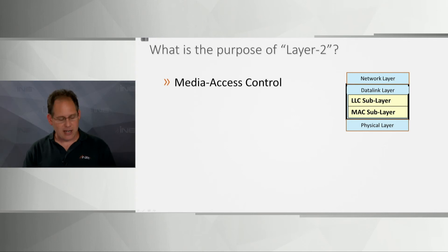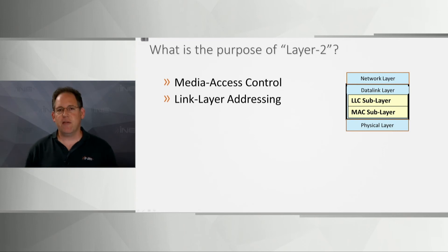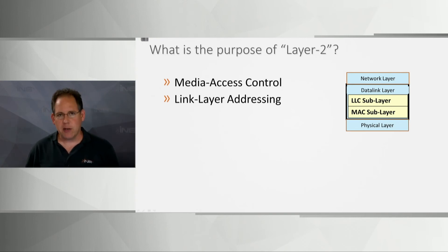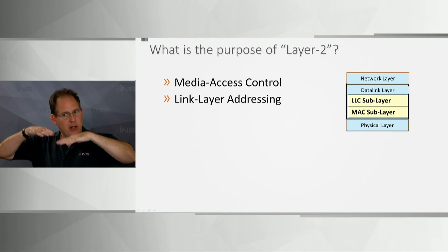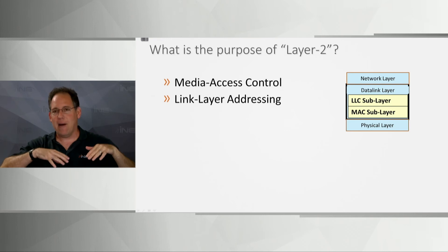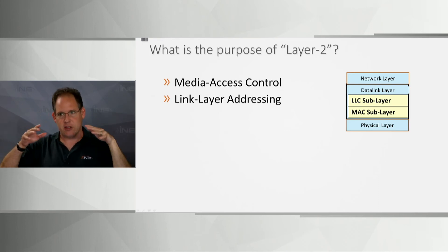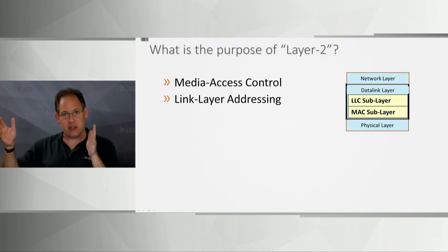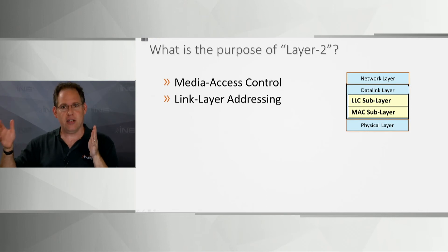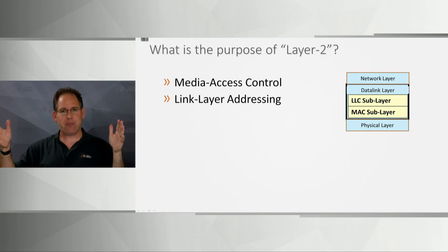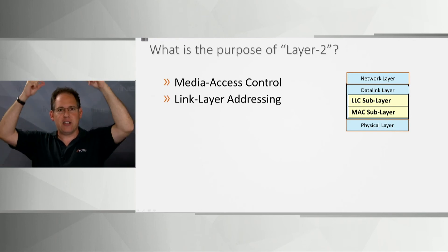At the data link layer we also have the Logical Link Control sub-layer. At the network layer above there are many protocols: IPv4, IPv6, AppleTalk, IPX, and others. The MAC sub-layer receives ones and zeros from layer 1, checks the destination address, confirms the frame is for this device, performs error checking, and then passes it up to the LLC sub-layer.